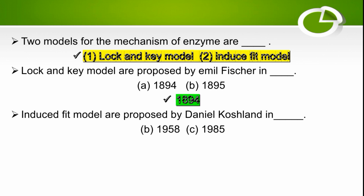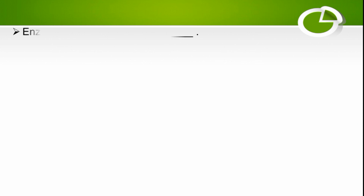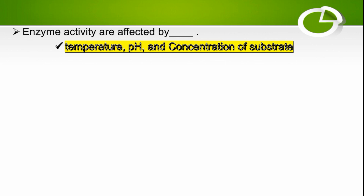The induced fit model was proposed by Daniel Koshland in 1958. The specific temperature at which an enzyme works best is called the optimum temperature, which ranges from 37 to 40°C. Enzyme activity is affected by temperature, pH, and concentration of substrate.